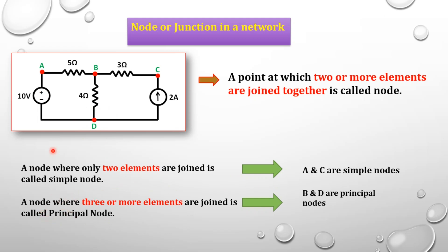Node is explained in two ways: simple node and principle node. A simple node is where only two elements are joined — points A and C are simple nodes. A principle node, or junction point, is where three or more different elements are joined. For example, point B has a 5 ohm, 4 ohm, and 3 ohm resistor meeting — that is a principle node. Point D has a voltage source, current source, and 4 ohm resistor joined, so D is also a principle node.